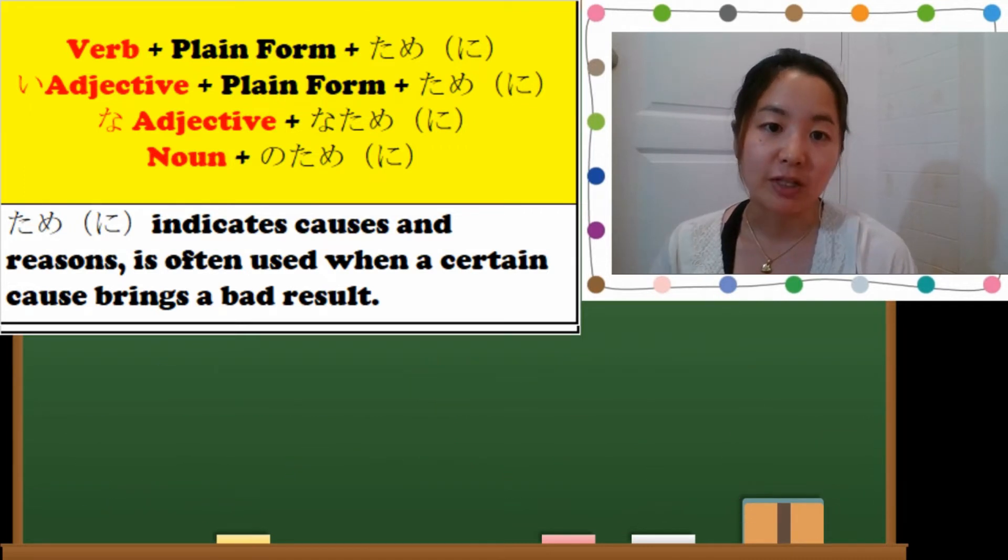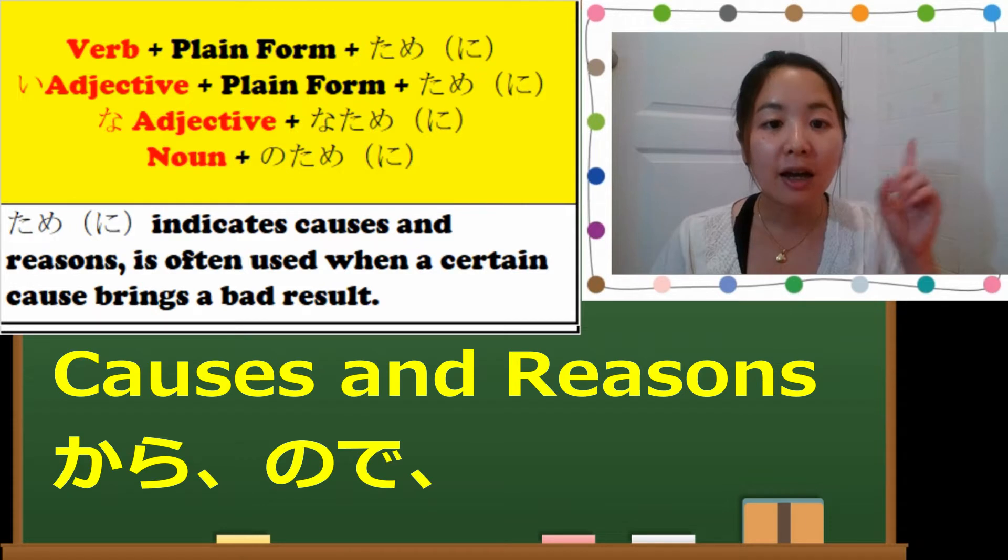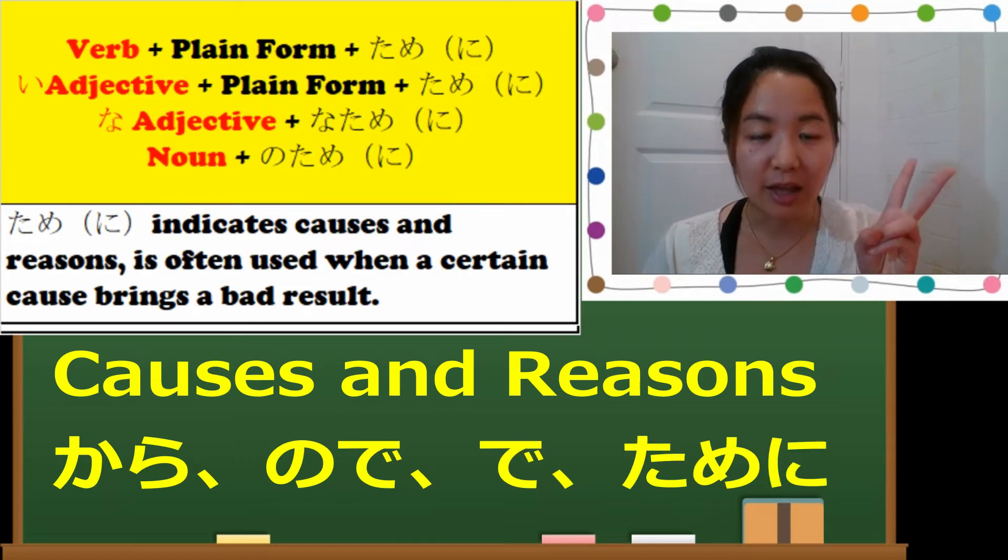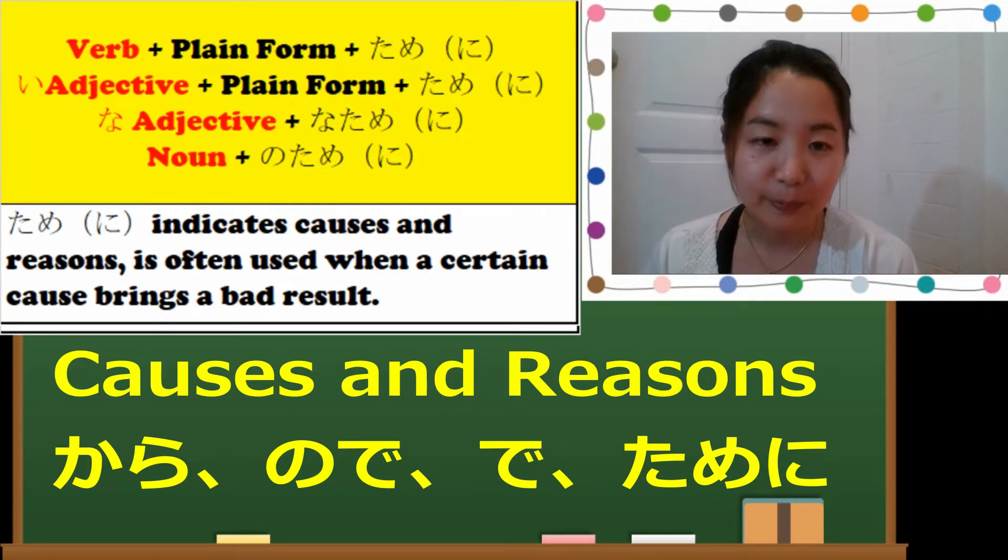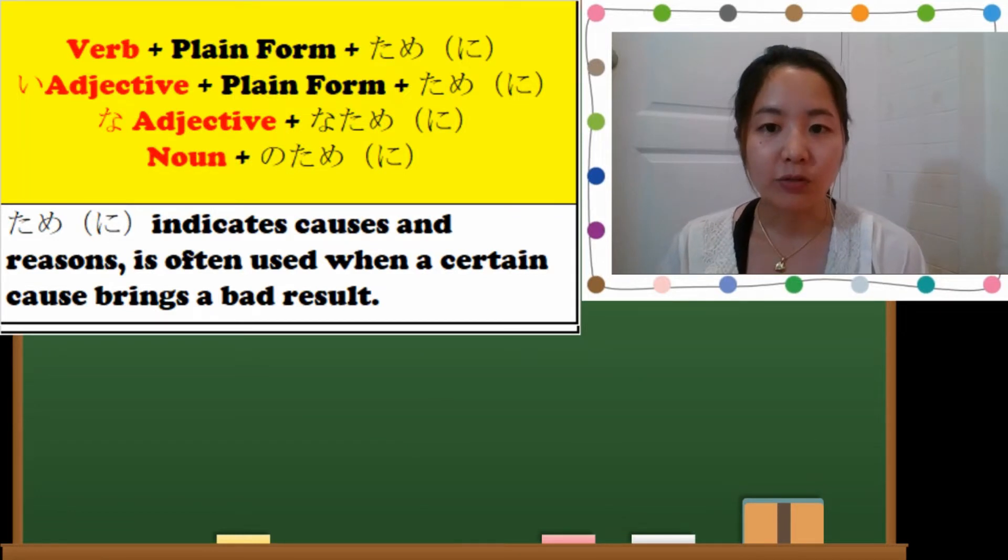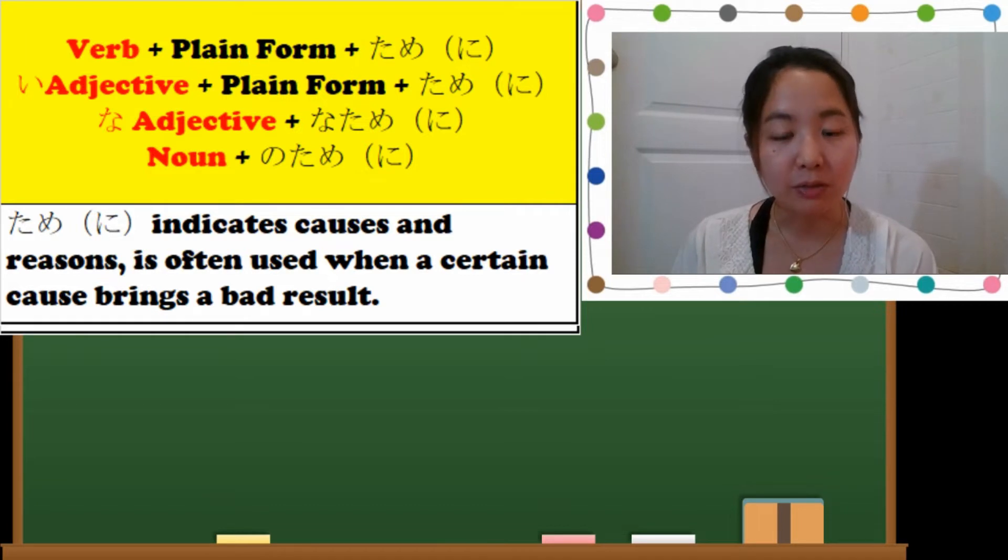So in my two previous videos, we have learned about three different types of causes and reasons expressions, which is kara, node, de, and today we will learn the fourth one, which is tame-ni. Tame-ni indicates causes and reasons and is often used when a certain cause brings a bad result. For example...